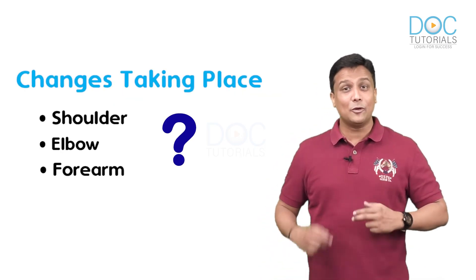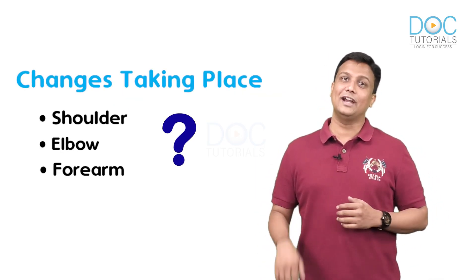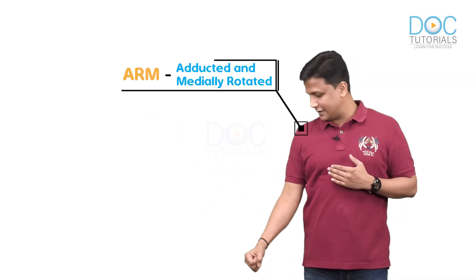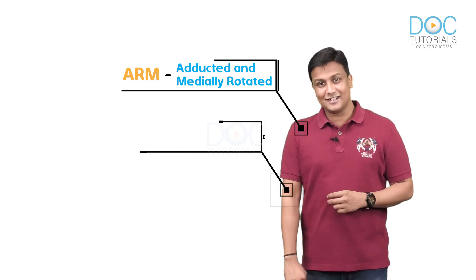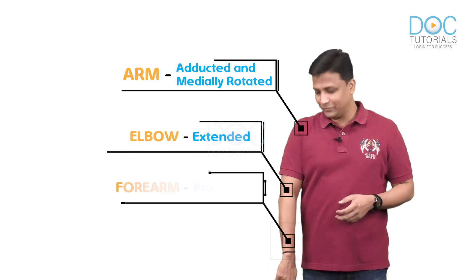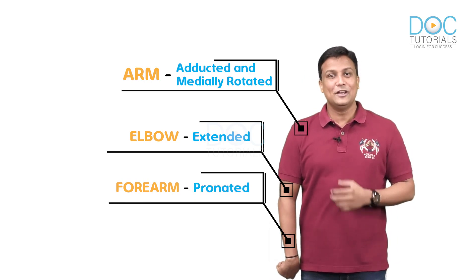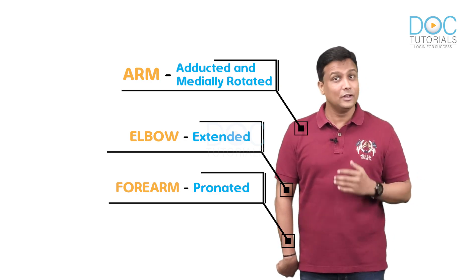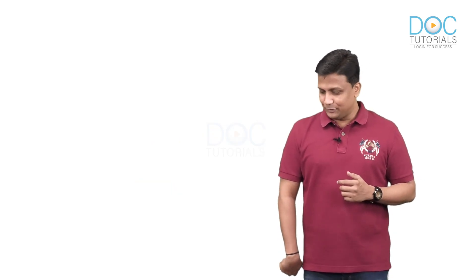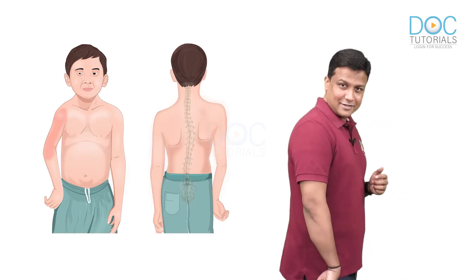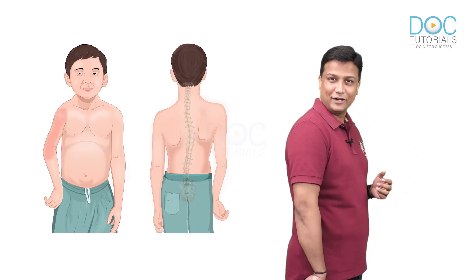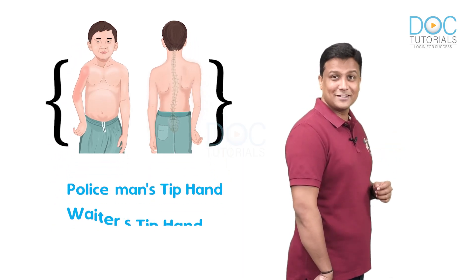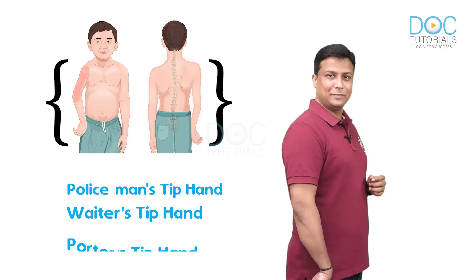To summarize the appearance of the upper limb in Erb's Paralysis: the arm will be in an adducted and medially rotated position, the elbow will be extended, the forearm will be pronated, and the fingers are flexed. This is how the patient will come to you in a hospital. This appearance resembles a tip hand — as if the person is asking for a tip — which is why it is known as the policeman's tip hand, the waiter's tip hand, or the porter's tip hand.